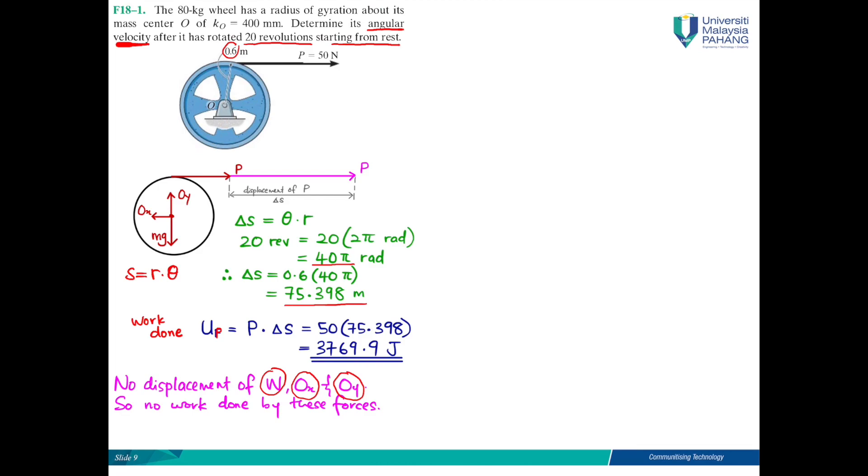It means that initially the wheel is not moving. Therefore, because it starts from rest, we know that the initial kinetic energy is equal to zero. So we write T1 equals zero, this is the initial kinetic energy. What about the kinetic energy after it has rotated 20 revolutions?